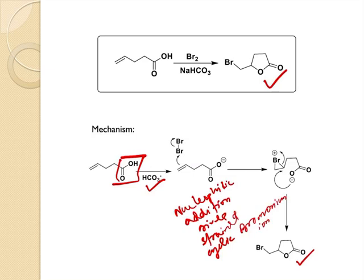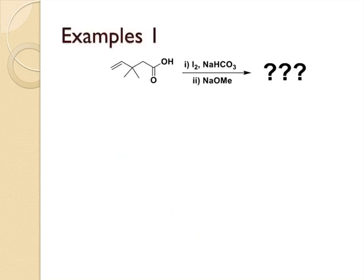Then the O minus attacks the strained cyclic bromonium ion to give the halolactonized product. So this is the mechanism: first deprotonation occurs, then nucleophilic addition occurs at the double bond position, then O minus attack to give halolactonized product. Let's see some more examples here.